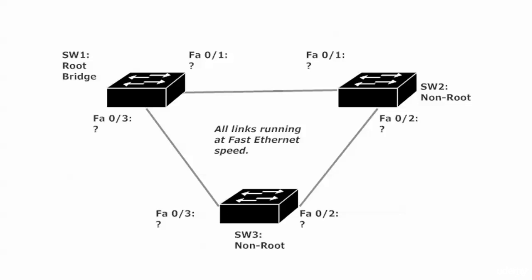Now what about those two ports on the root bridge — what role are they going to play, and will they be in forwarding or blocking mode when STP has finished converging? We know there are no root ports on the root bridge, so they've got to be something else. What they'll actually be are designated ports. If all the ports are forwarding there, you know you're on the root — and that's exactly what it is. On Switch One, both of those ports will be designated ports, and both of them will be in forwarding mode.